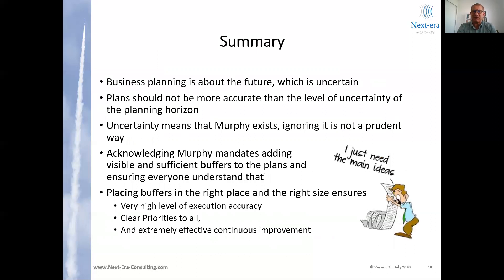In summary: business planning is about the future, and the future contains uncertainty — this is not a surprise. We should have plans that are not more accurate than the level of uncertainty of the planning horizon. We know Murphy exists and we cannot ignore it. Acknowledging Murphy mandates adding visible and sufficient buffers in the right places and the right size in the plan. When we add them, they convert the function of planning, shift the focus toward execution, and enable us to have a very high level of execution accuracy, clear priorities for everyone, and extremely effective improvement efforts. Thank you for being with us.